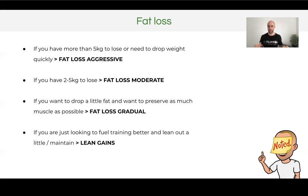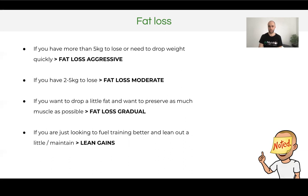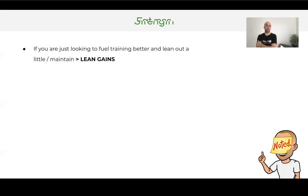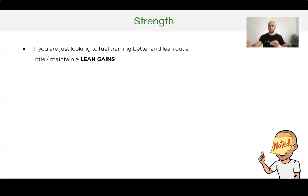If you just want to fuel training better and lean out a little — what we'd call a lean gain setup — we're not necessarily trying to lose weight but rather change body composition: drop a little fat and put on or maintain a little muscle mass. This sets you at more of a maintenance calorie target. Finding your calorie maintenance makes dieting and fueling training a lot easier, because once you know where your body is stable, you can make adjustments above and below.